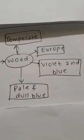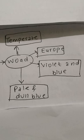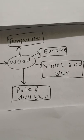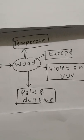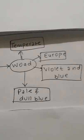The other colors formed by woad were violet and blue. Woad was grown in Europe and in temperate regions.